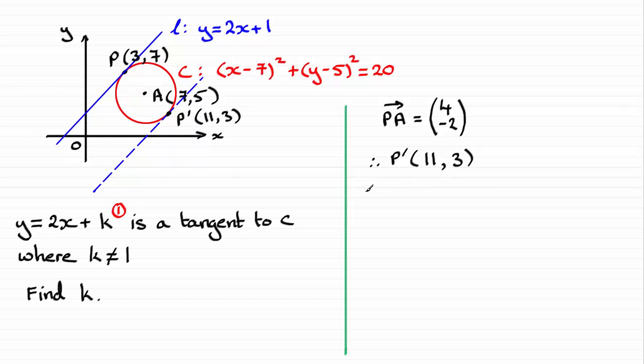So, I'm just going to say sub in those coordinates there. And we, therefore, have y, which is three, equals two x, so that's two times the 11 there, that's 22, plus the constant k. k, therefore, must be equal to three minus 22, that's going to be minus 19.